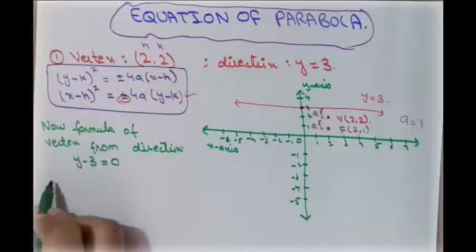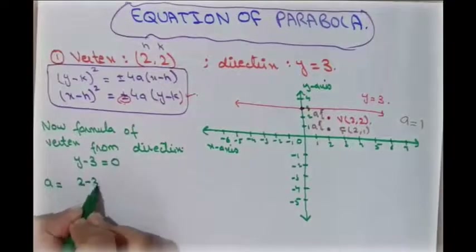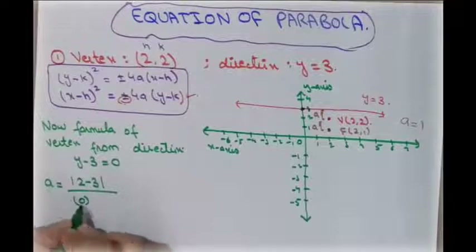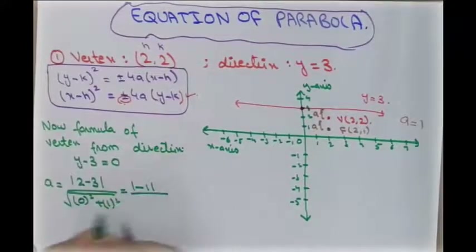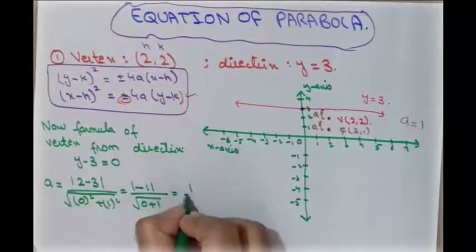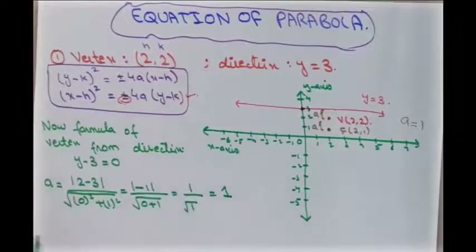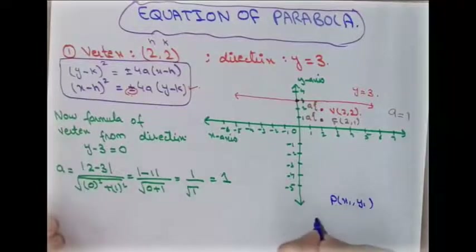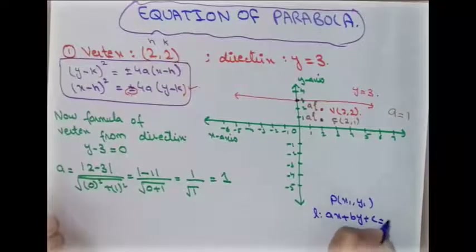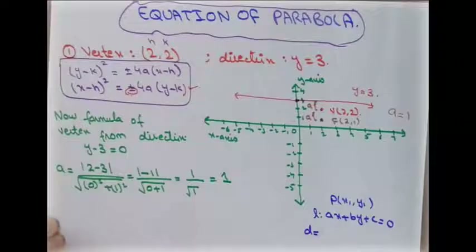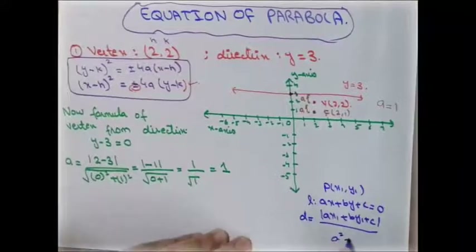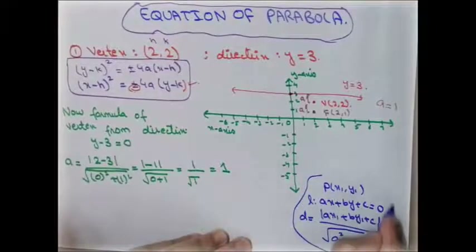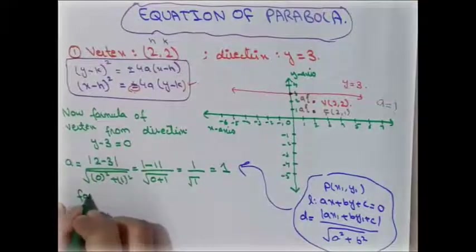Applying the distance formula: a = |2 − 3| / √(0² + 1²) = |−1| / 1 = 1. So a = 1. The general distance formula from point (x₁, y₁) to line ax + by + c = 0 is |ax₁ + by₁ + c| / √(a² + b²). Using this, we confirm a = 1, focus point (2, 1), h = 2, k = 2.